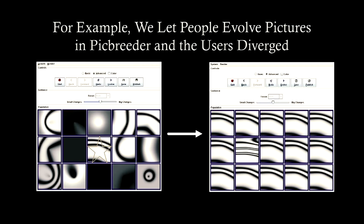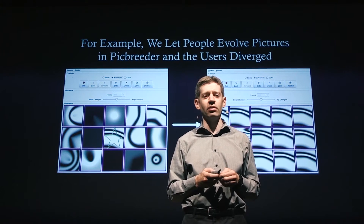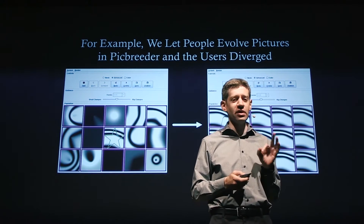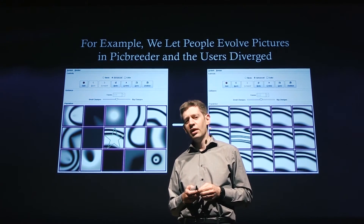This is one of the few divergent systems that actually exists, and I think it's a very interesting experiment. This is something we did in my research group at the University of Central Florida a few years ago called Picbreeder. It's a little bit of cheating because there are humans involved — ultimately we'd like to build completely autonomous algorithms that are creative on their own — but this is still very interesting because it actually does elicit a divergent process.